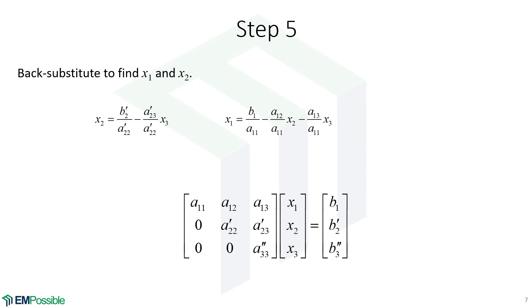Now that we have X3, we can use the second row equation to calculate X2. Given X2 and X3, we can use the first row equation to get X1. Very fast and simple once we have this upper triangular matrix.